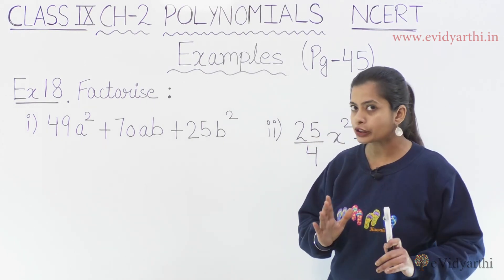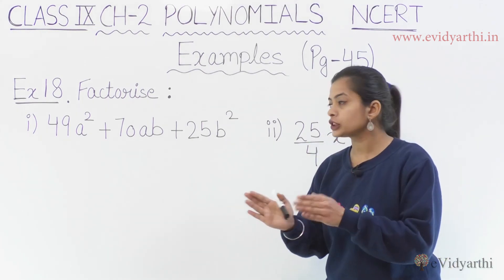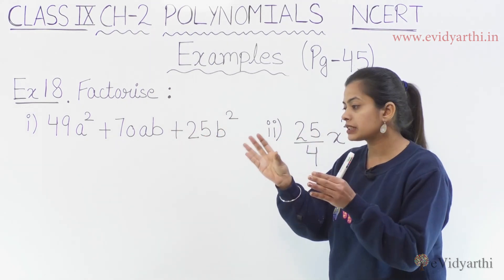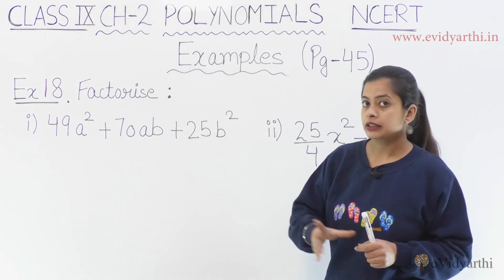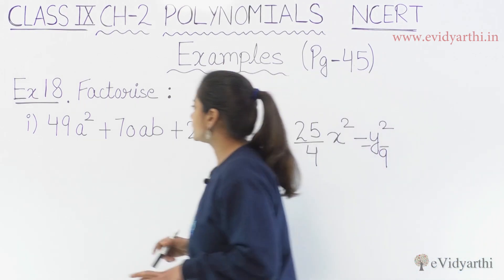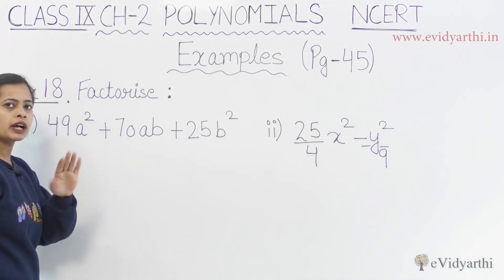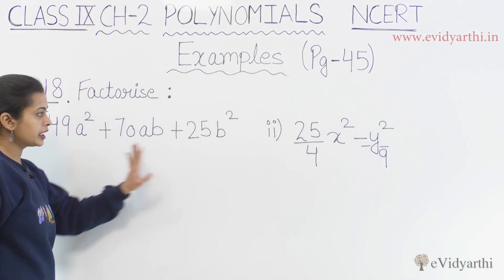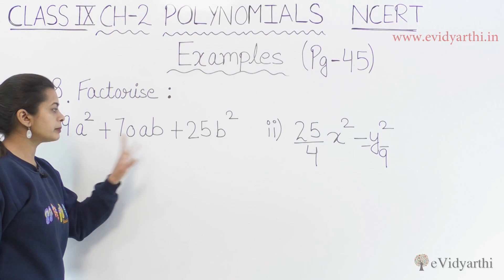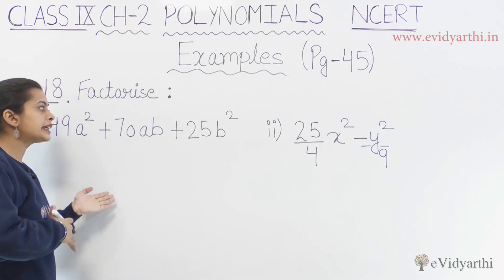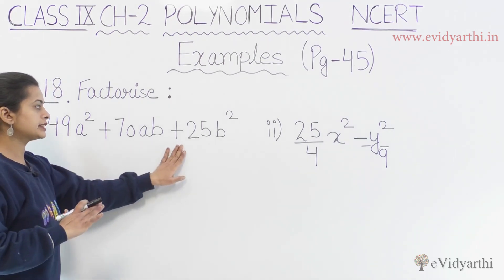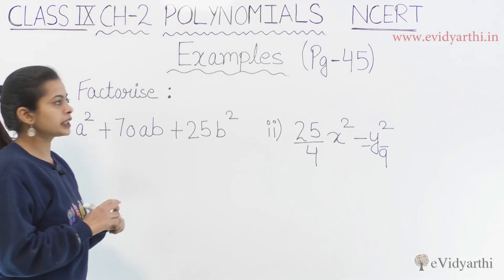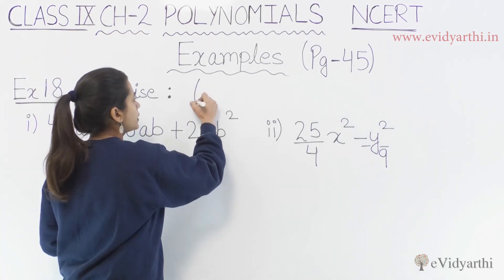Before we write the question, I will write an identity so you will get the idea of which identity to use. You can see that in the first part we have some A² and some B², and it has a product. Every sign is positive, so this means that we have the x plus y whole square identity.